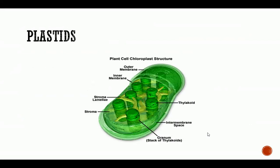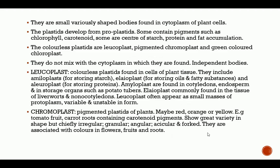Plastids — a plant cell chloroplast is an example. It contains an outer membrane, inner membrane, stroma lamellae, stroma (the liquid interior), thylakoids (disc-like foldings stacked upon one another), intermembrane space, and granum — the stack of thylakoids is called a granum.